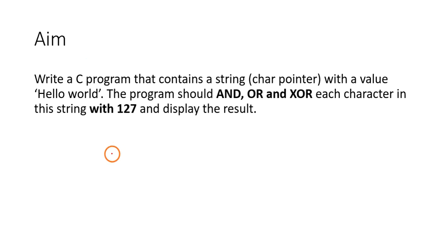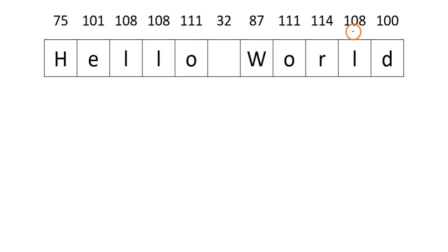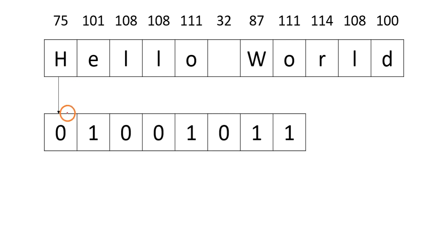This is very similar to the previous program where we are going to take the string 'hello world' again, and this time we are going to perform three operations: AND, OR, and XOR with the value 127. The given string is 'hello world' and these are the ASCII values of each character in the string, along with the binary values.